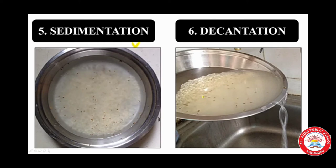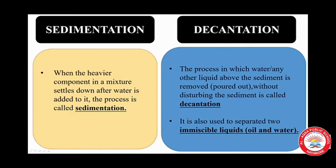When the water at the top is removed, that process is called decantation. Let us define both processes. Sedimentation: when the heavier component in a mixture settles down after water is added, the process is called sedimentation. Decantation: the process in which water is removed without disturbing the sediment is called decantation.